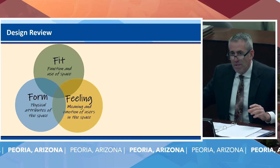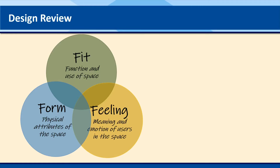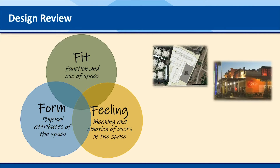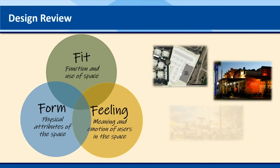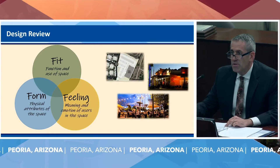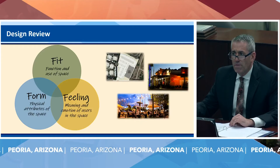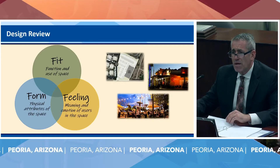The design guidelines really come down to three components: fit, form, and feeling. Fit is the site layout — the function and use of space and how the building fits in relation to the site. Form is the physical attributes of the space — the architecture. For example, a low-lying building with extensive shading moved up to the street has a different form than a building on Bell Road or Grand Avenue. Feeling is all the theming — what meaning and emotion does the space conjure up. Perhaps it looks festive and energetic, as opposed to a more muted or neighborly character. That's what design review comes down to: fit, form, and feeling.